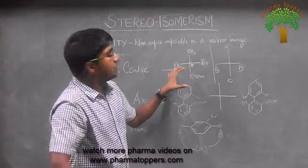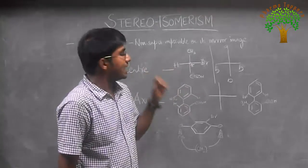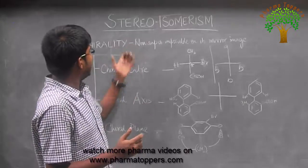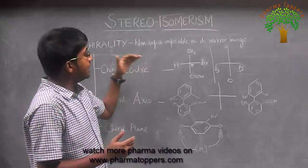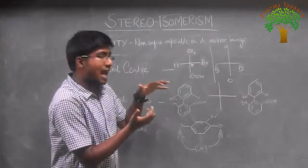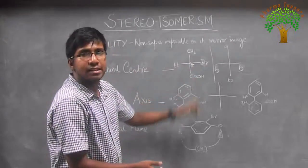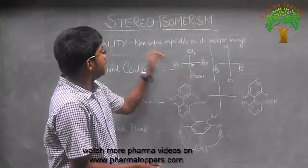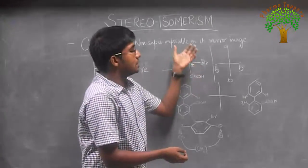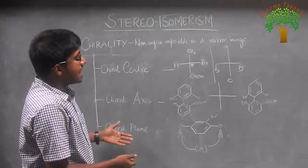This is actually responsible for optical activity. Now many people have a misconception that chirality can only be due to an asymmetric centre. Remember, don't confuse the two terms — chirality and chiral centre or asymmetric centre. Asymmetric centre is responsible for chirality, but chirality can also be due to a chiral axis and a chiral plane.